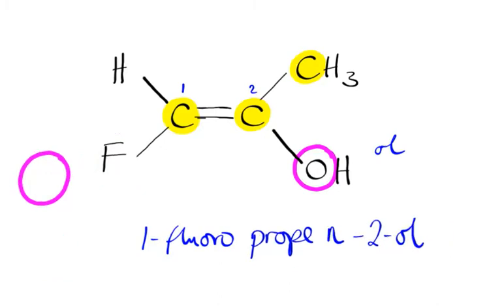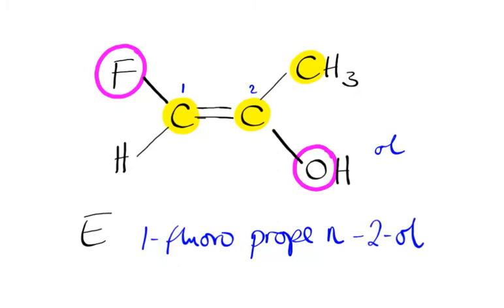To make the E isomer of this compound, I just want to move one of the groups around on one side. So if the hydrogen and the fluorine swap positions, my priority groups, the fluorine and the hydroxy, are now across from each other. So this would give us the E isomer of 1-fluoropropene-2-ol.